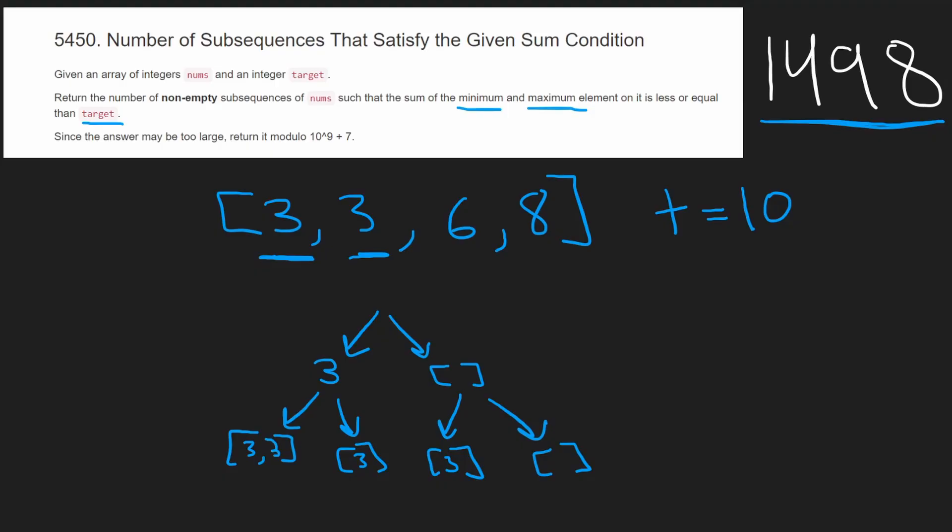And so you basically keep doing this, and at the end, you take the minimum and the maximum from the subsequence, and check if they sum to less than or equal to our target. This is going to be 2 to the power of n. So can we do better?